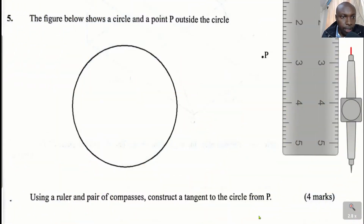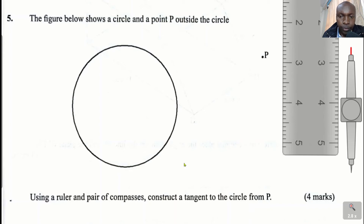Question number five: the figure below shows a circle and a point P outside the circle. The circle is drawn and the point P is here outside the circle. Using a ruler and a pair of compasses, construct a tangent to the circle from P. The first thing you're going to do is locate the center of the circle.